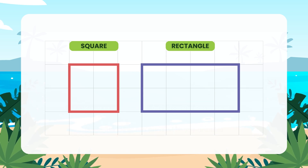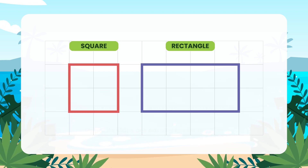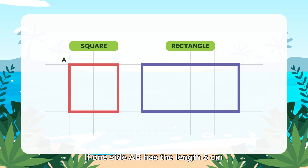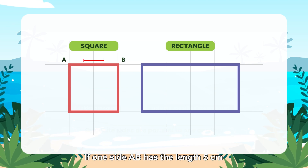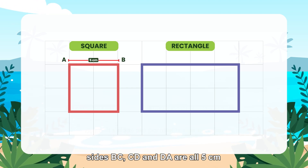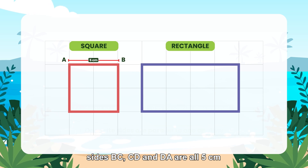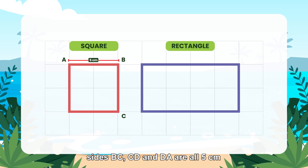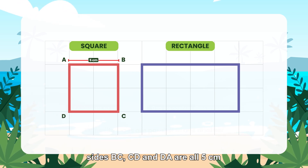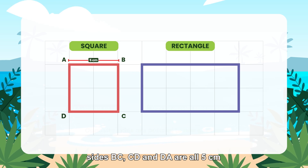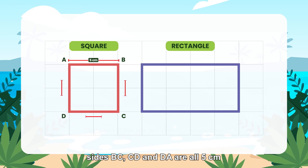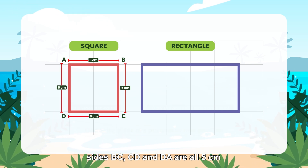Shape 1 is a square. If one side AB has the length 5 cm, then sides BC, CD, and DA are all 5 cm.